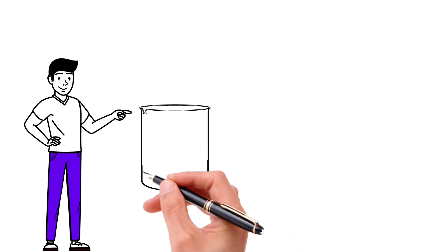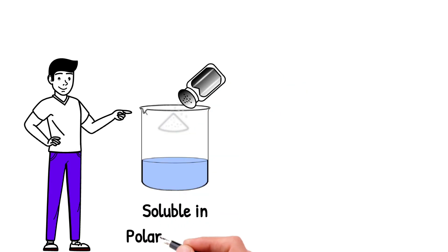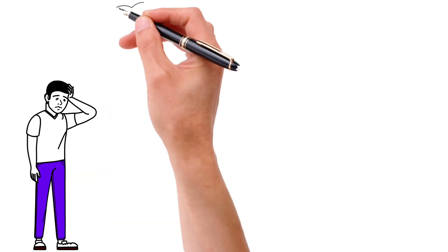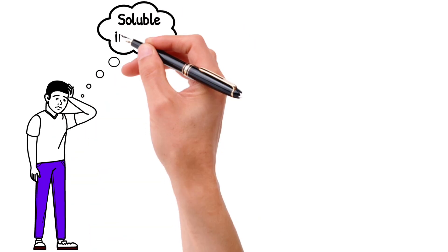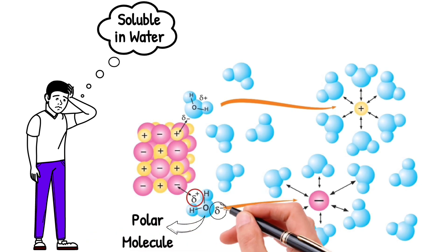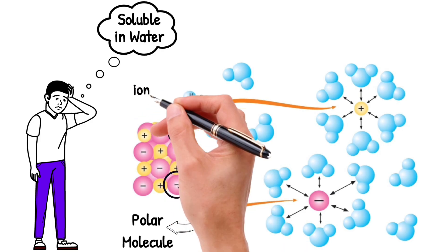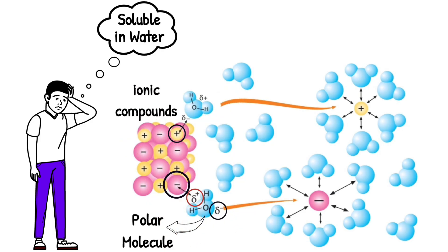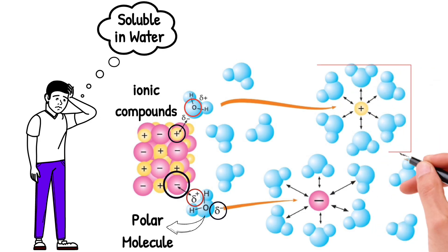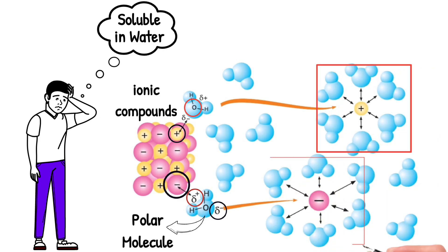Ionic compounds are soluble in polar solvents like water, but they are insoluble in organic solvents. Why are these compounds soluble in water? Well, water is a polar molecule, meaning it has a partial positive charge on one end, and a partial negative charge on the other. So the positive and negative ions of ionic compounds are attracted to the opposite charges on the water molecule. This breaks apart the ionic compound, and allows it to dissolve in the water.